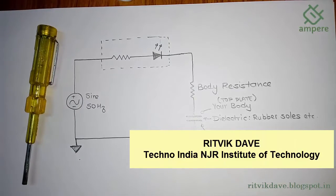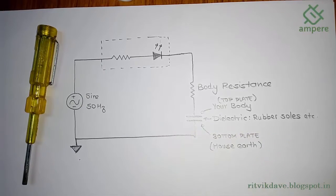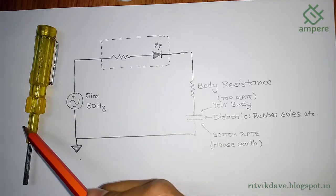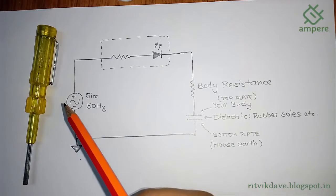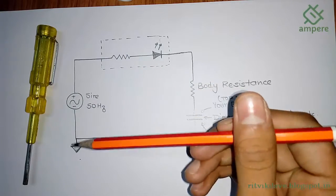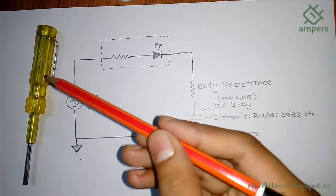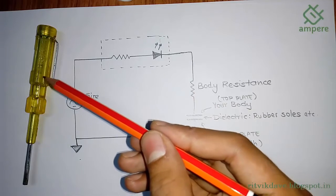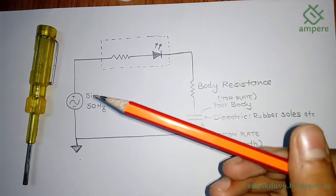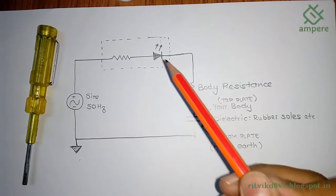Hey guys, this is Ritvik Davey, and we are here to learn how an electrical line tester works. This is the circuit inside the tester, and this is the AC mains line in which we plug the screwdriver. A light glows here which indicates that supply is present. We are going to learn today how this circuit works.